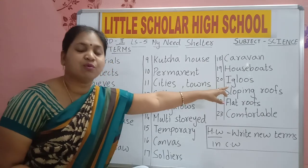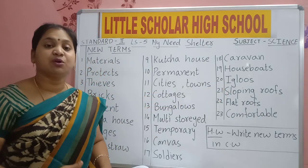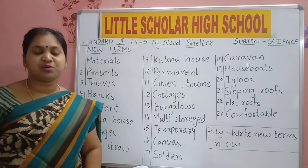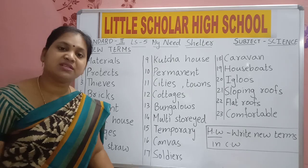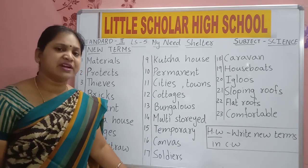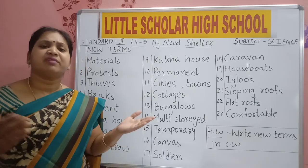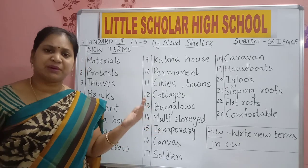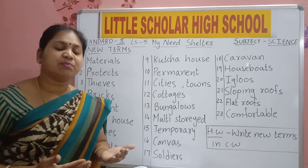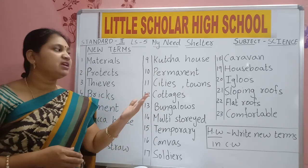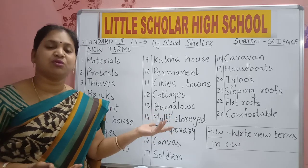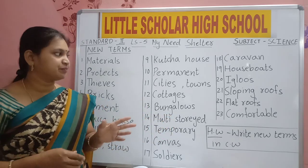Next term: Igloos — I-G-L-O-O-S. Igloos are houses made of snow. We can find igloos in very cold places where snow falls. Igloo is a house made of ice.